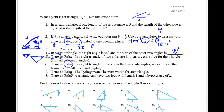The Pythagorean theorem works for any triangle — that's false. The Pythagorean theorem only works for right triangles. In fact, it is an if-and-only-if condition: the Pythagorean theorem works on a triangle if and only if it is a right triangle. Therefore, the Pythagorean theorem is one test to check whether a triangle is a right triangle.